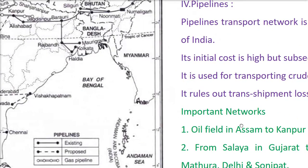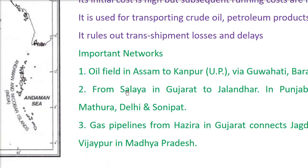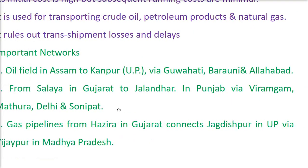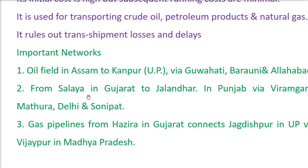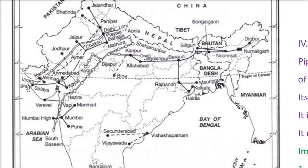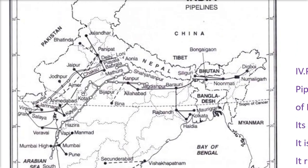The second pipeline runs from Salaya in Gujarat to Jalandhar in Punjab, via Viramgam, Mathura, Delhi, and Sonipat. This is the line — starting at Salaya, passing through Viramgam, continuing up to Delhi, and finally reaching Jalandhar. In between it also touches various places.